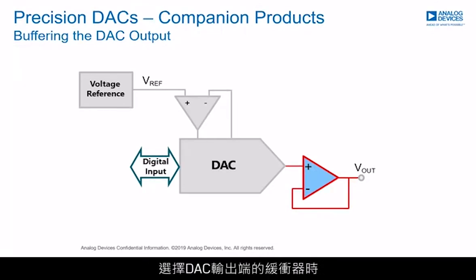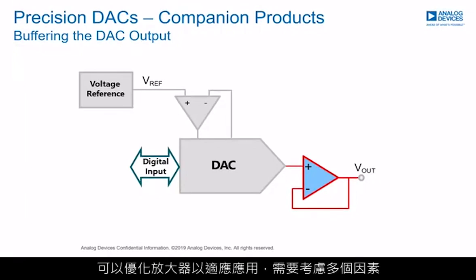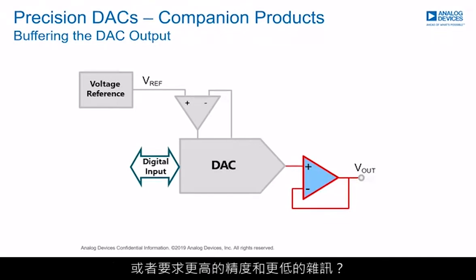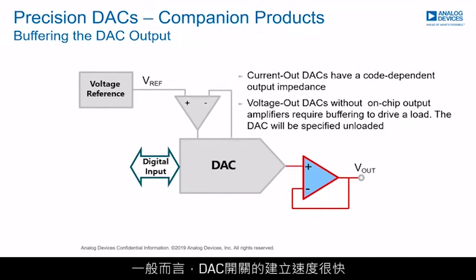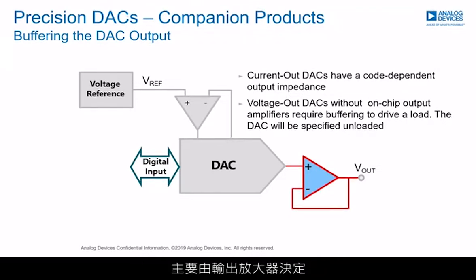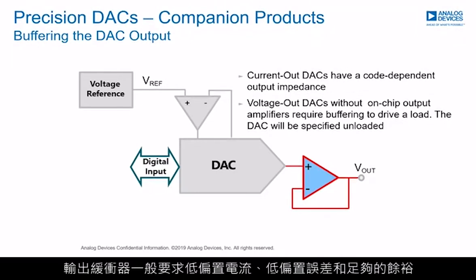When selecting the buffer at the output of the DAC, the amplifier can be optimized to fit the application, and there are a number of considerations: is faster settling time or higher bandwidth required, or is greater precision and lower noise needed? Cost, package size, and number of channels are also factors. In general, DAC switches settle quickly, so the slew rate and settling time of a DAC circuit is determined largely by the output amplifier. The output buffer generally needs to meet low bias currents, low offset errors, and sufficient headroom.